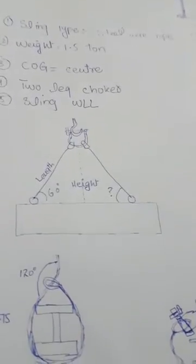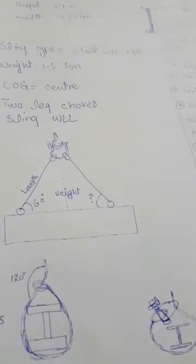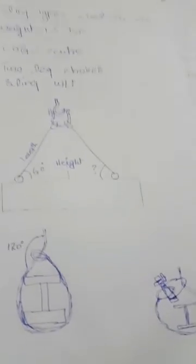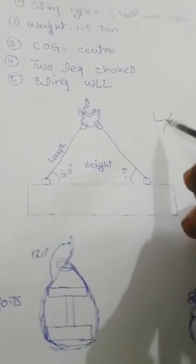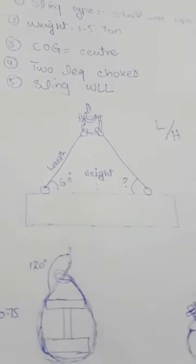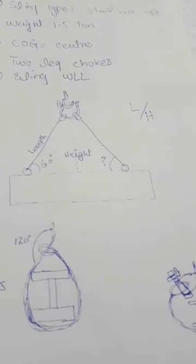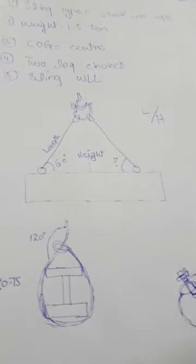We will find it for two legs - two leg sling we are using for an I beam. So the sling working load we will find using length of sling divided by height, and this ratio will come out.